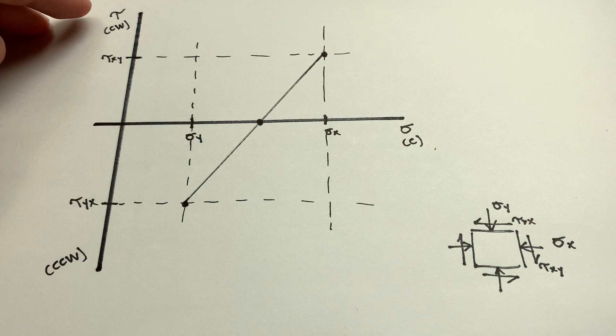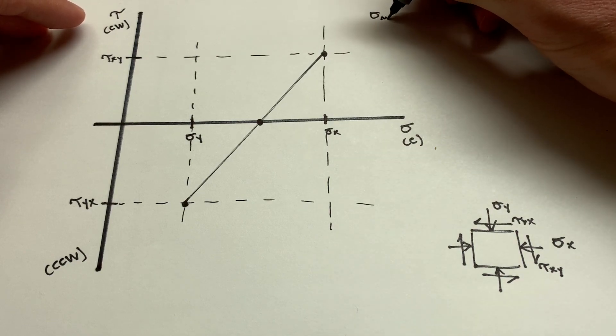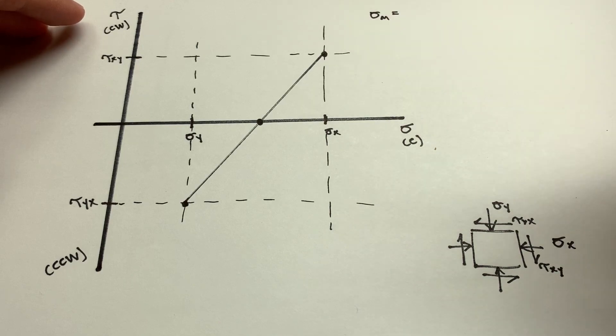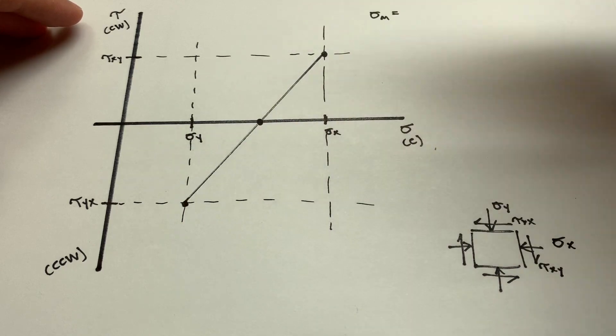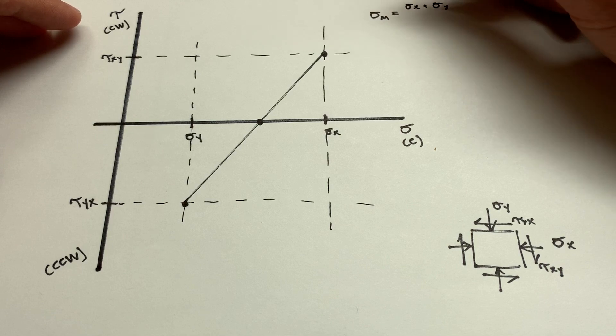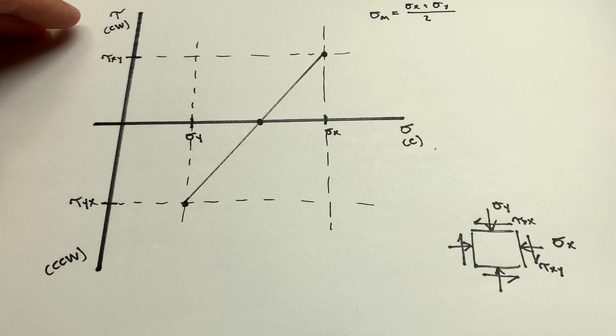And then this allows us to find the center point of that circle. Now, it shouldn't be too hard. We'll call this... Sometimes you'll call it sigma average or sigma mean. I'll call it sigma m for short. We'll say that's going to be equal to... Think about it. This is going to be the average value between these two. And since we have only two points, that average just becomes sigma x plus sigma y divided by 2.